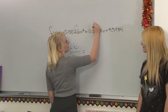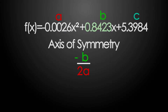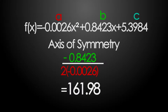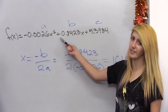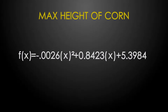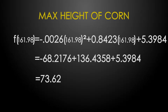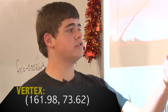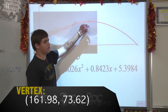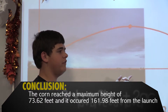This is our a, this is our b, and this is our c. Now we'll plug that into our equation, which equals 161.98. We take this x value and plug it back into this equation to get the maximum height the corn traveled. When you plug them back in, you get 73.62. This means our vertex has an x coordinate of 161.98 and a y coordinate of 73.62, so the maximum height the corn traveled was 73.62 feet and it occurred at 161.98 feet from the initial launch.